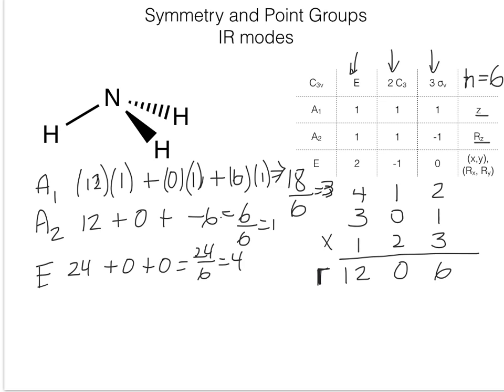We subtract one A1, leaving two A1's remaining. We subtract the A2, leaving no A2's remaining. For E, xy transforming together counts as one, and the rotations together also count as one, so we subtract two from four, which leaves two E representations.